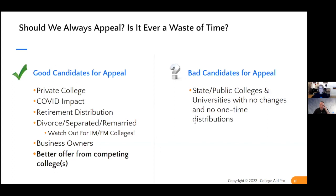If we have twins, is that good for an appeal? It's a great question. If you have twins, your EFC for the federal methodology will go down about 50%, but that's going to change with the 2024-2025 school year. At certain schools your EFC may still be reduced. There are significant changes coming to the FAFSA, so stay tuned and get into our community for these webinars.